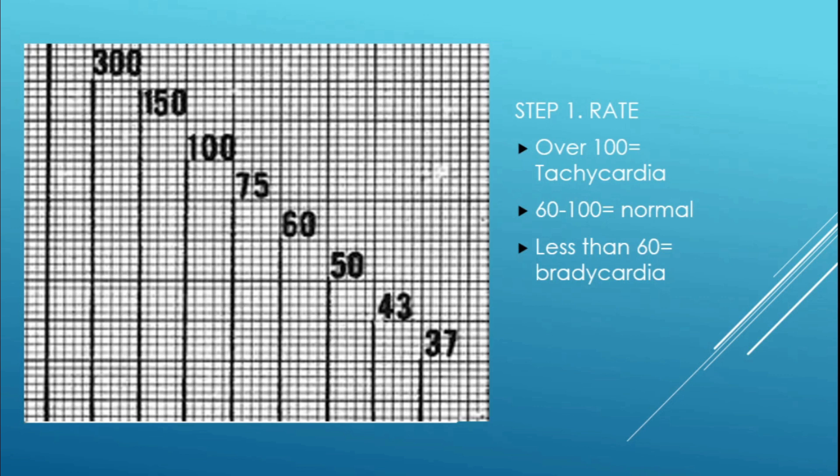A rate over 100 is tachycardia, 60 to 100 is normal, and less than 60 is bradycardia. This is only good for regular rhythms. If you have a patient who's irregularly irregular — like AFib or variable conduction ratio with atrial flutter — you may need to count out the whole rhythm strip, which is usually about 10 seconds, and multiply by the number of QRS complexes.